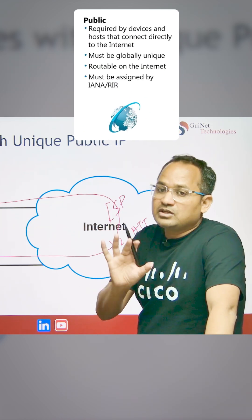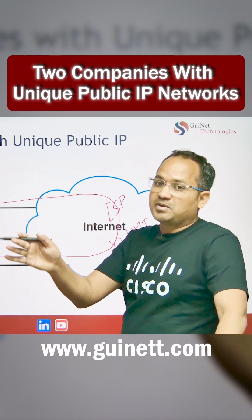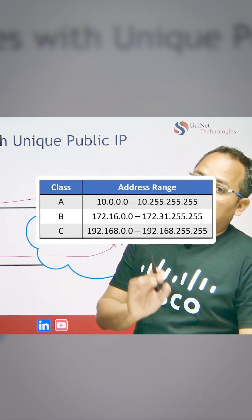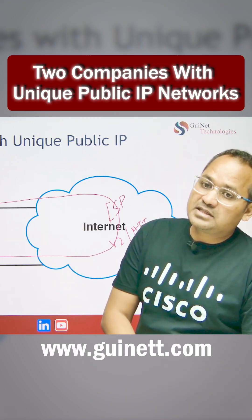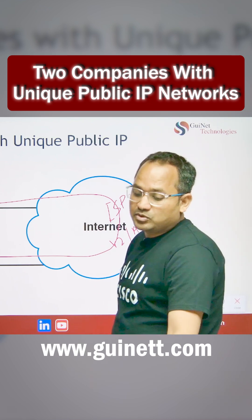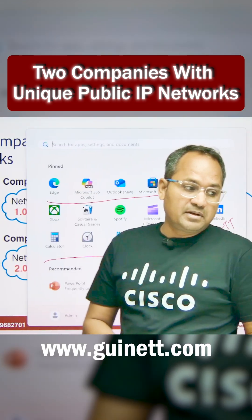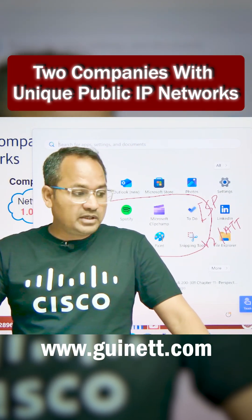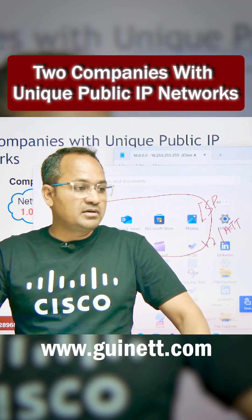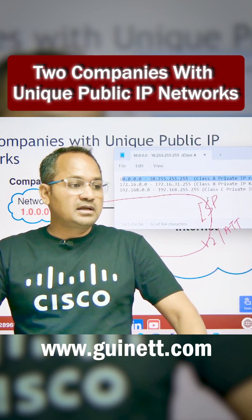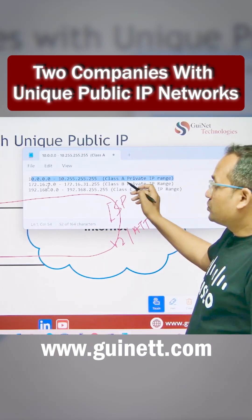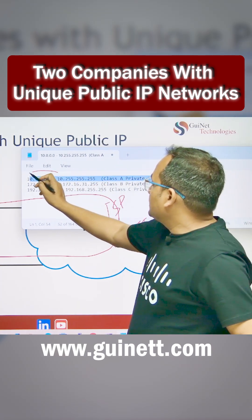Whatever the range of IP addresses we discussed in the previous lecture — we covered Class A, Class B, Class C IP addresses and also what is a private IP range. Let me show you again for your reference. This is the private IP address range — any IP address belonging to this range is a private IP address.